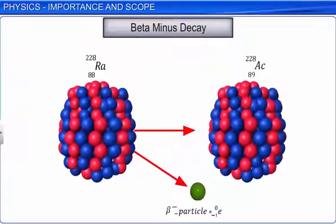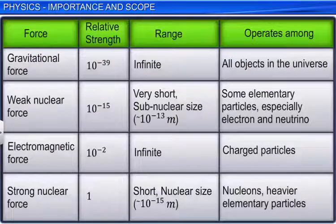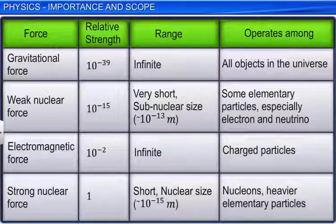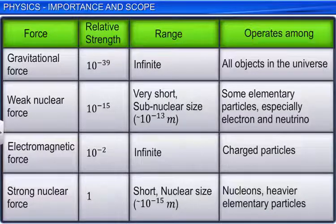In beta decay, the nucleus emits an electron and an uncharged particle called neutrino. The table shows the relative strength and range of all the four fundamental forces of nature.